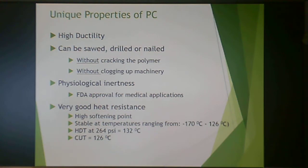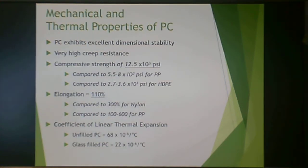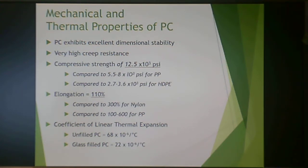Its heat deflection temperature is 132°C and its critical use temperature is 126°C — you can reach 126 occasionally, but going higher will cause softening. Polycarbonate has excellent dimensional stability and very high creep resistance due to molecular rigidity and the methyl wedges preventing chain slippage. It has impressive compression strength, 110% elongation (more similar to polypropylene than nylon), and a very good coefficient of linear thermal expansion, better in glass-filled versus unfilled grades.